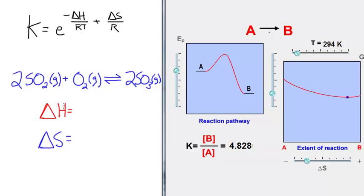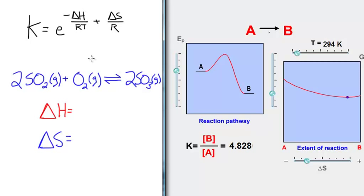Let's look at a real reaction: the combustion of sulfur dioxide with oxygen to form sulfur trioxide. I want to make a qualitative prediction of the signs of delta H and delta S based on structural features. For delta H, if we go from weaker to stronger bonds, delta H would be negative. The mantra that works many times is that if I go from AA bonds — bonds between the same atoms, like O2 — to AB bonds between different atoms, AB bonds in general tend to be stronger than AA bonds. So we would predict this process to be exothermic, and of course it's a combustion process, which further supports that prediction.